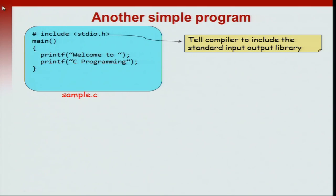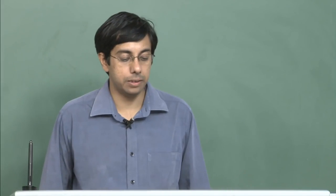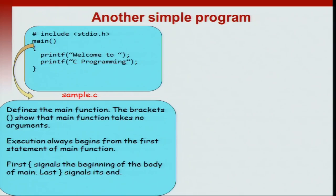To recap, the first line — hash include stdio dot h — tells the compiler to include the standard output library. Then we have the main function. The open and close brackets immediately after main show that main is a function. Execution always begins at the first line of the main statement. The body of the function, the logic of the function, is enclosed within two curly braces. The first curly brace signals the beginning of the function and the last curly brace says that the function is over.